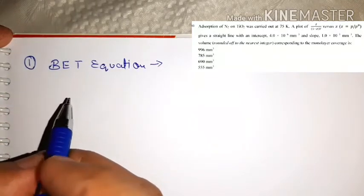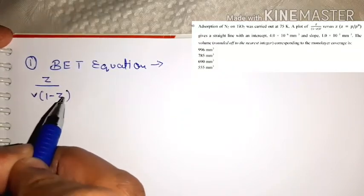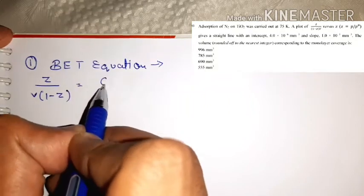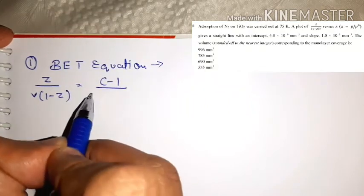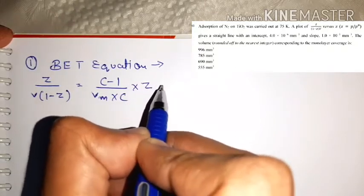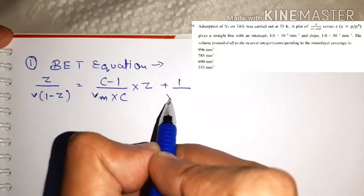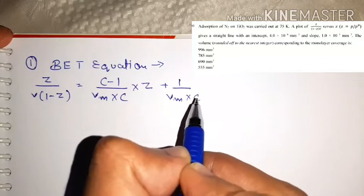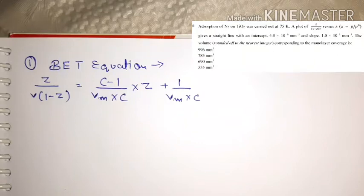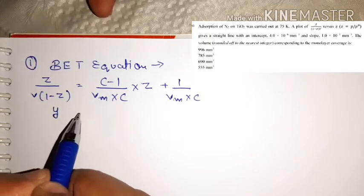This question is directly from the BET equation. The BET equation is: z / [v(1−z)] = (c−1)/(Vm·c) · z + 1/(Vm·c), where z = p/p₀ as given in the question.